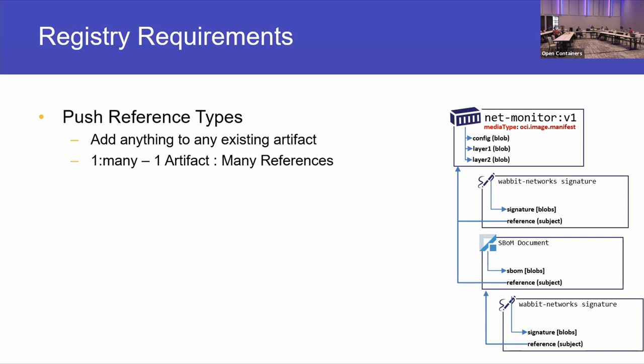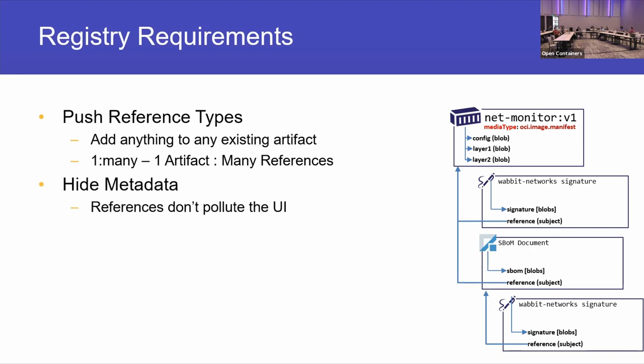We wanted to hide all this metadata. We really didn't want the fact that there is a signature, SBOM, or things we haven't thought about to pollute the APIs and UIs that customers use today. How do we surface this information in an additive way that doesn't break existing experiences?